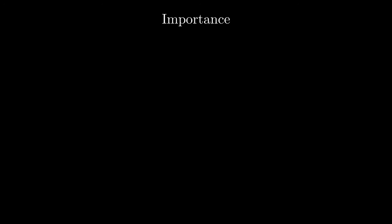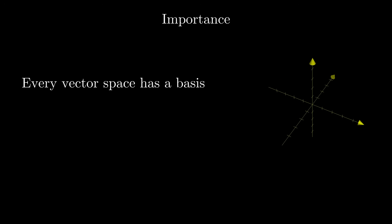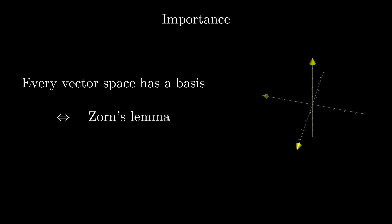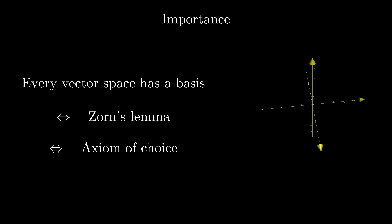But why is this axiom even important? Well, consider this statement: every vector space has a basis. This sounds remarkably obvious, something you should be able to prove from first principles. Actually, this is one of the most famous equivalents of Zorn's lemma, which is equivalent to the axiom of choice. So if you don't have the axiom, you don't have this remarkably useful fact, and linear algebra becomes much more difficult. Another immeasurably useful result in algebra — that every field has an algebraic closure — also depends on the axiom of choice.